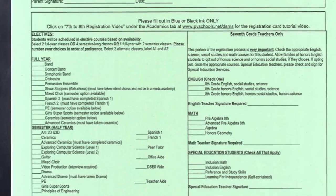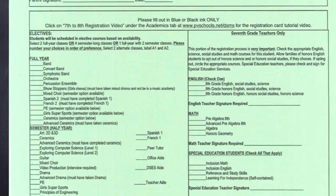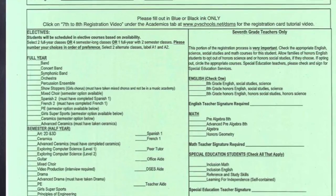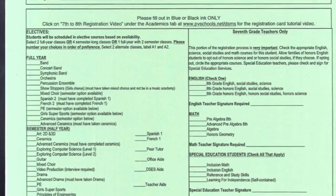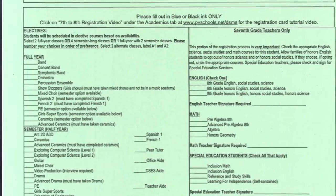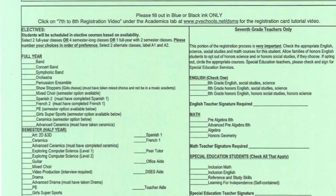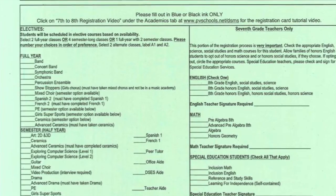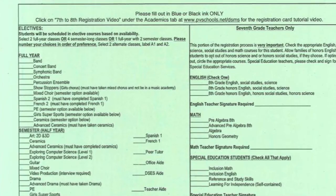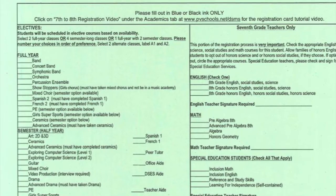Let's begin by looking at the right side of the card where it says 7th grade teachers only. Your teacher's signatures on this side of the card will indicate proper placement for English and Math. Be sure to have your English teacher sign it where it says English teacher signature required, and your math teacher sign it where it says math teacher signature required. That is all you need to do on this side of the card.